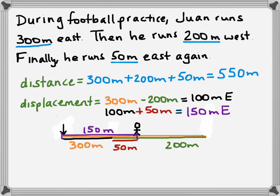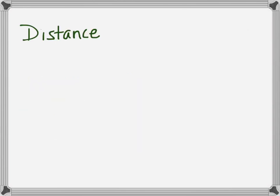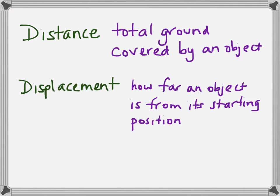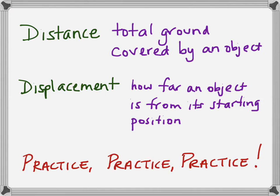So that distance from where he started to where he ended is 150 meters, and that is his displacement. Let's review the two definitions: distance is the total ground covered by an object during its motion; displacement is how far an object is from its starting position. While it may seem difficult at first, the best way to learn this is to practice, practice, and practice again. Make sure you try your problems, keep practicing, and always ask your teacher if you have questions.